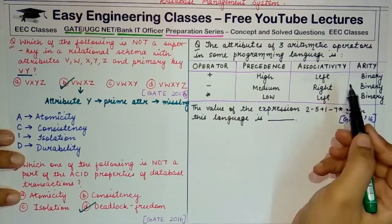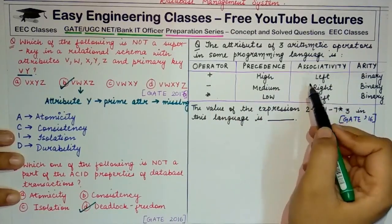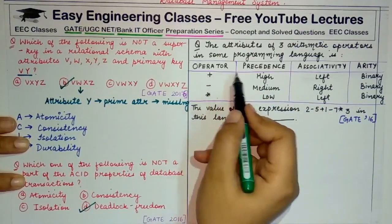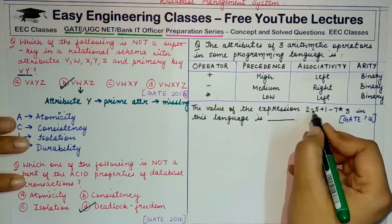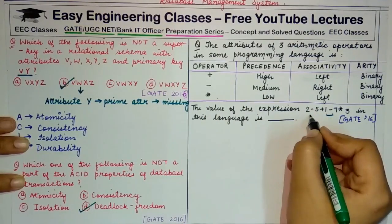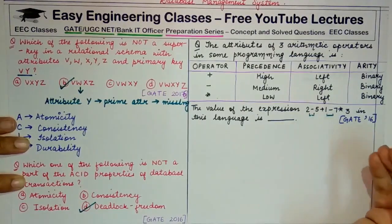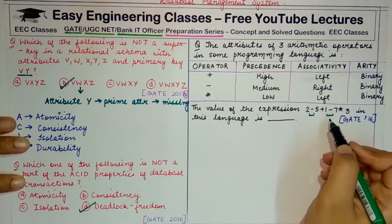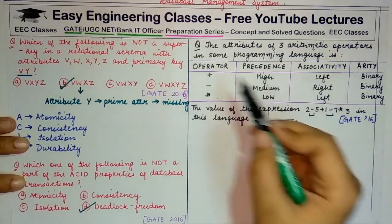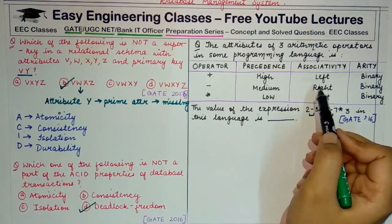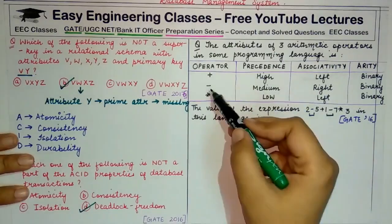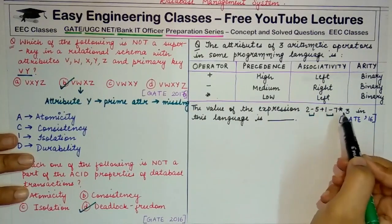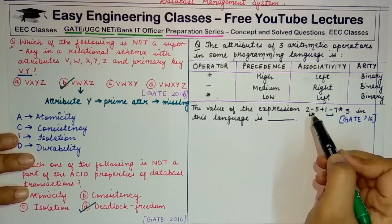Associativity tells us what to do when there are two operators of the same kind. In the given expression there are two minus signs. Since minus is right associative, the right minus would be executed before the left minus. The expression to evaluate is: 2 minus 5 plus 1 minus 7 star 3.